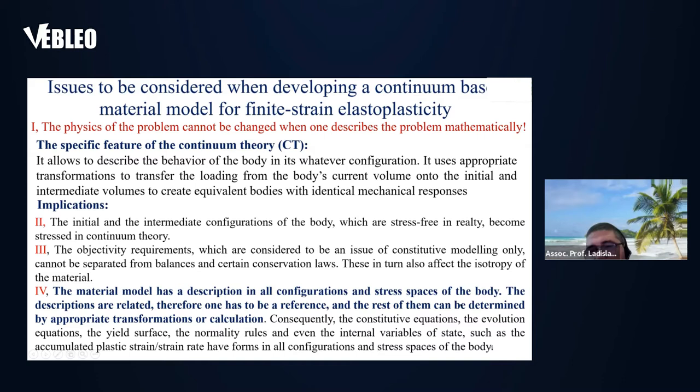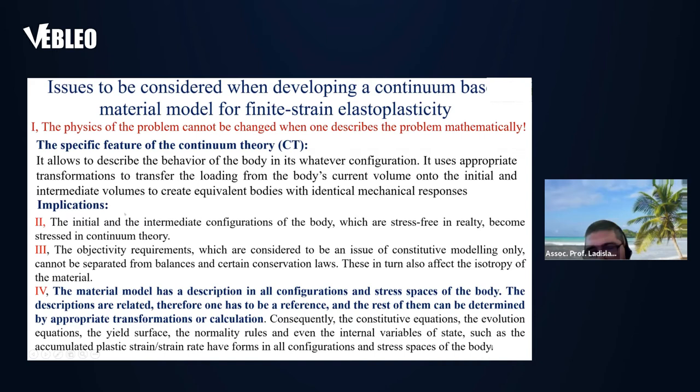The consequence of this is that all constitutive equations, the evolution equation, the yield surface, the normality rules, and even the internal variables of state such as the accumulated plastic strain or strain rate, have forms in all configurations and stress spaces of the body. I've denoted these topics by Roman numerals 1, 2, 3, because next I'm going to deal with each of them.